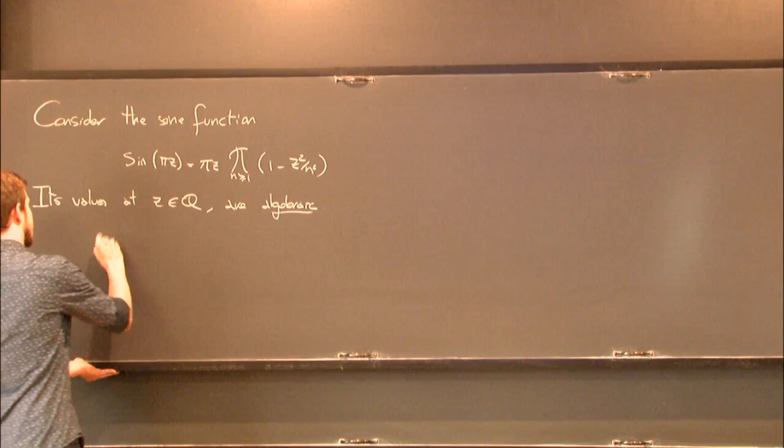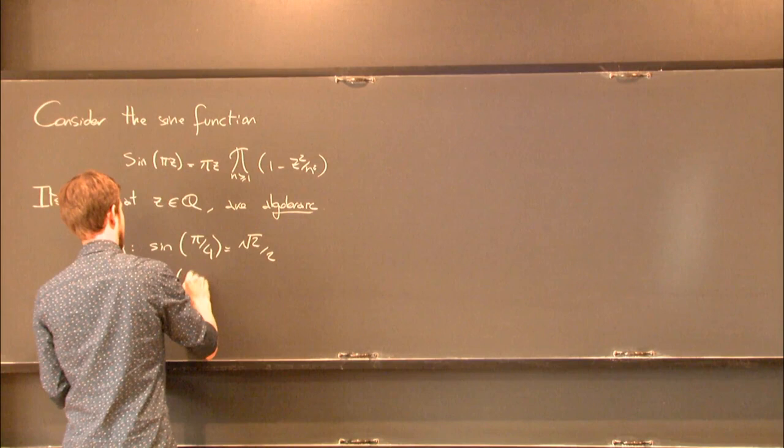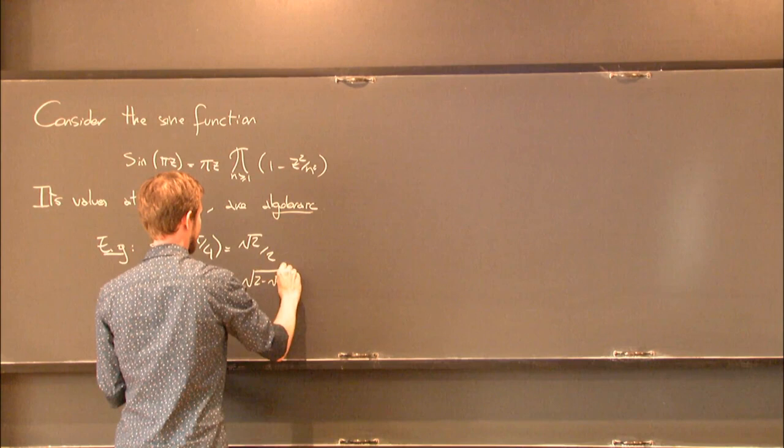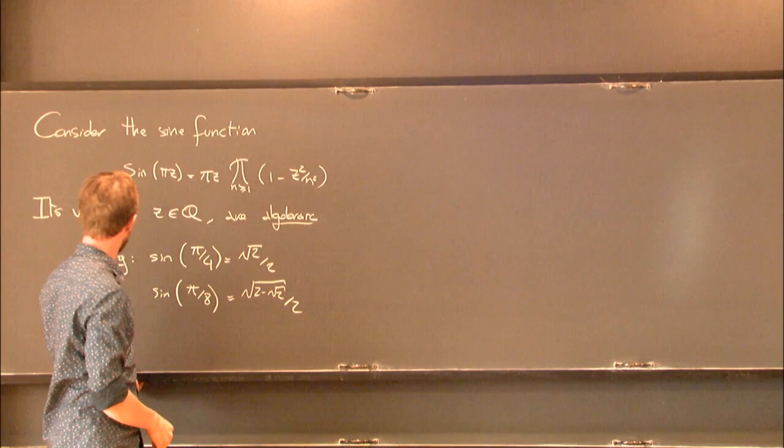Just to give you a bunch of simple examples: if we take the sine of π/4, we get the square root of 2 over 2. If we take the sine of π/8, we get the square root of 2 minus the square root of 2 over 2. There's a lot of interesting things to say about these numbers, but the mere fact that they're algebraic is not a terribly deep fact.